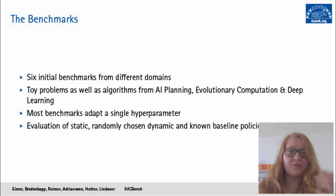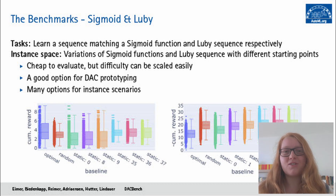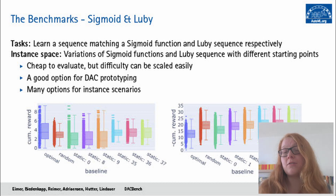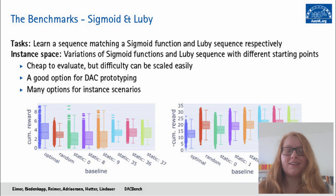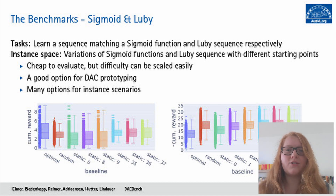Let's go through them one by one, starting with our toy benchmarks. Our toy benchmarks are called SIGMOID and LUBY. As the names suggest, the task is to approximate a sigmoid function or the Luby sequence in each of them. They are very cheap to evaluate because there is no real target algorithm running in the background, and as they are very flexible, they can be scaled easily in difficulty. This makes them a good option for DAC prototyping — we can create very specific scenarios in the instance space and go very high up in difficulty while staying computationally very cheap.